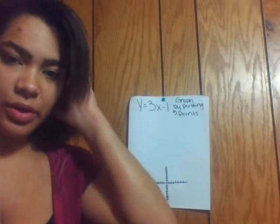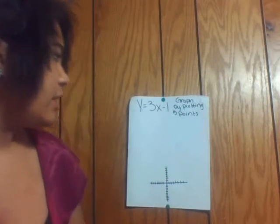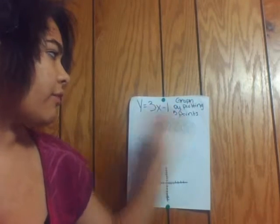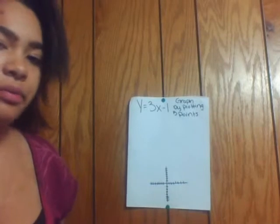Hi, my name is Cassidy, and I'm doing a math problem. It's how to graph y equals 3x minus 1 by plotting 5 points on a graph and making a line.